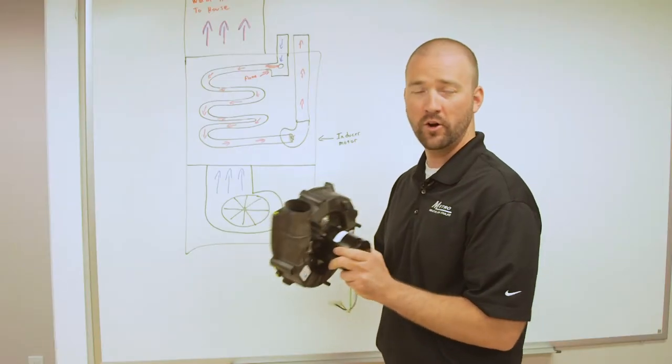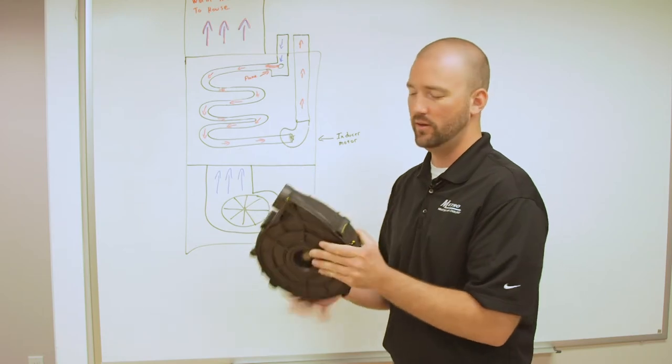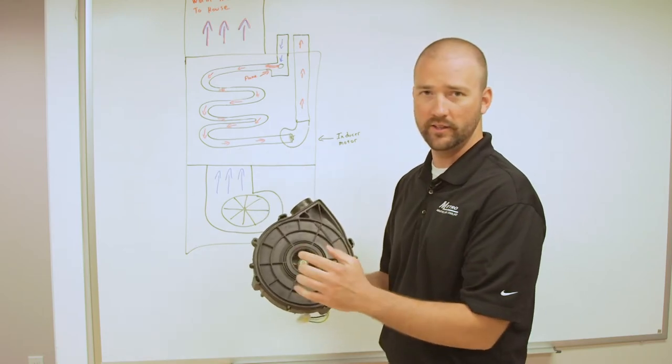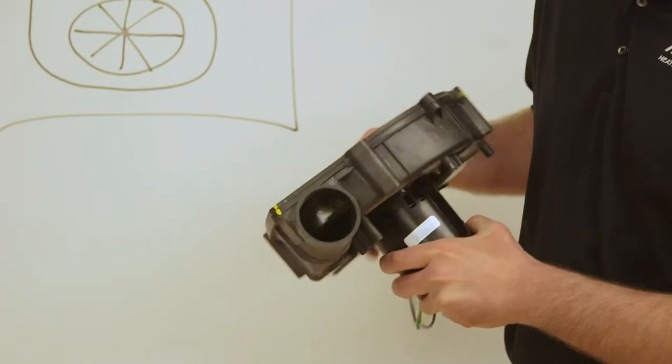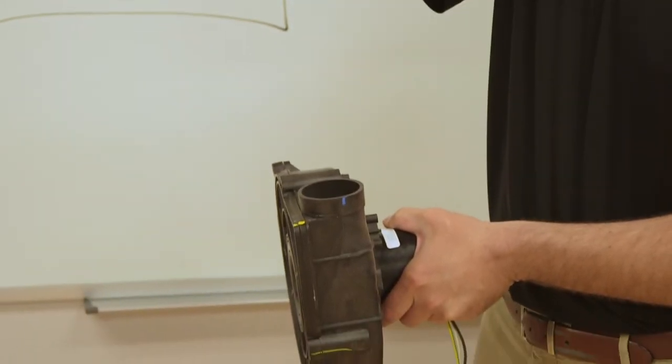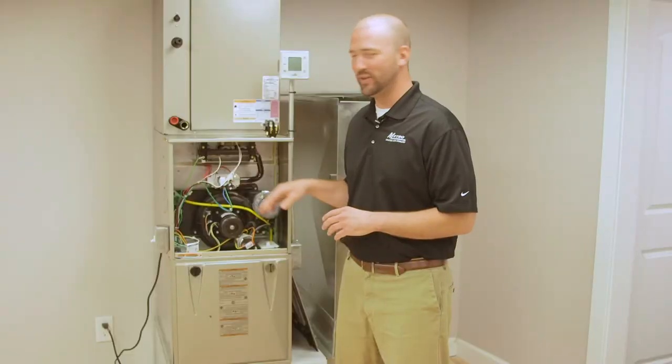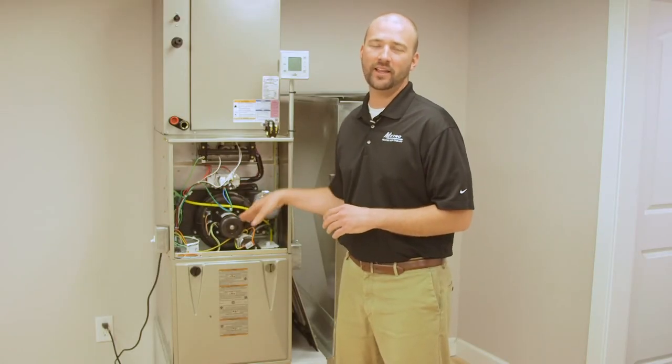So this is an inducer motor and housing taken out of a furnace. What you got is your hole here. This is what's sucking the air from the heat exchanger and then this is exhausting outside the PVC to outside your house. So this is what an inducer motor is and its functions.